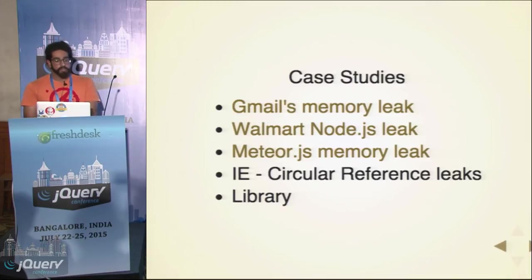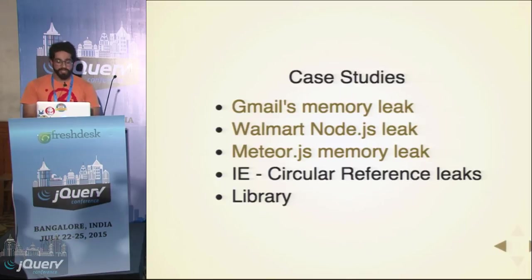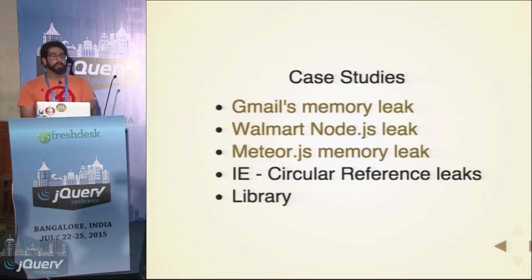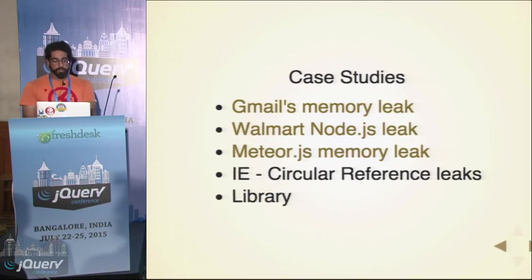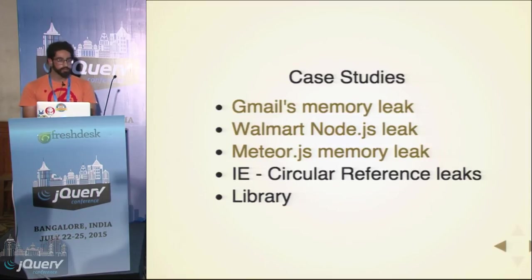Some really interesting case studies: there's a great write-up on memory leaks. Walmart had a Node.js leak that they have documented. The snippets I showed you are from Meteor.js, which is excellently blogged about. IE 6 and 7 had a circular reference leak that was really well documented. Pick up your favorite jQuery or JavaScript library, check their git commits and logs, and see the fixes they have done against memory leaks.